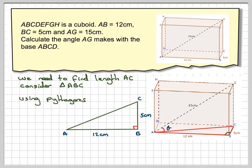So using Pythagoras, AC squared is AB squared plus BC squared. So it's going to be 12 squared plus 5 squared, which is 144 plus 25, which gives me 169.